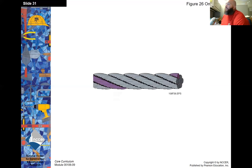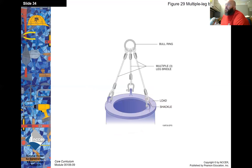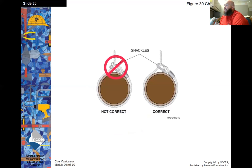One rope lay. A bridle hitch consists of two or more slings attached to the same hook, as shown in the picture. There's also a multi-leg bridle hitch with three slings attached to one ring. For a choker hitch, the correct way is to have the rounded end of the clevis with the end of the sling going through it — this ensures you won't pinch the sling. If done incorrectly, movement of the wire rope could unscrew the pin and cause the clevis to come loose.